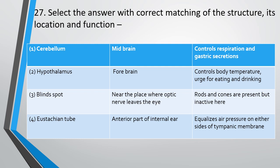Question 27. Select the answer with correct matching of structure, location and function. Options include: cerebellum in midbrain controlling respiration and gastric secretion; hypothalamus in forebrain controlling body temperature and urge for eating and drinking; blind spot near where the optic nerve leaves the eye with rods and cones present but inactive; or Eustachian tube equalizing air pressure on either side of the tympanic membrane. The correct answer is option 2 — hypothalamus, located in the forebrain, controls body temperature and urge for eating and drinking.